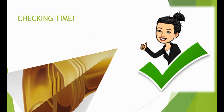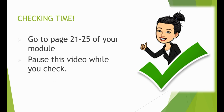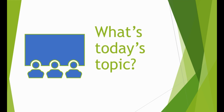Were you able to answer all items in What's New? Great — let's see how you did. Go to page 21 to 25 of your module and pause this video while you check your work. Did you get a perfect score? Awesome! Almost perfect? That's alright — let's do better next time. So do you have an idea what we're going to be talking about today? That's right — we'll be talking about the non-Mendelian pattern of inheritance.